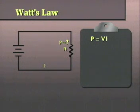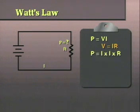Since P equals V times I, but V equals I times R, we can substitute the formula for voltage in place of V in the power formula.